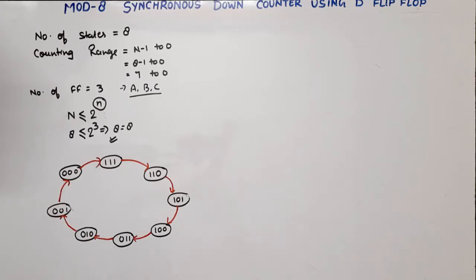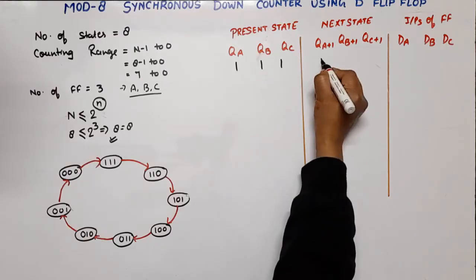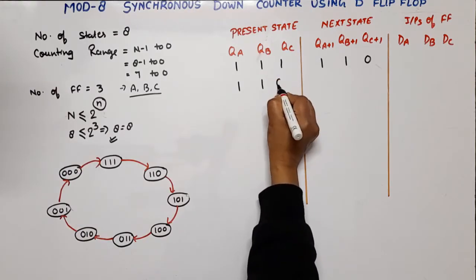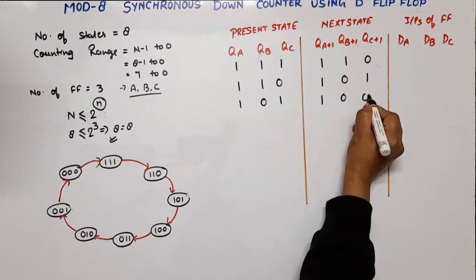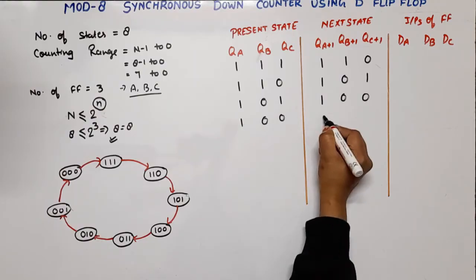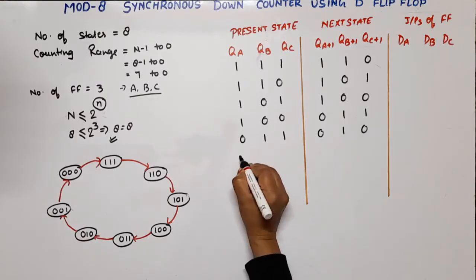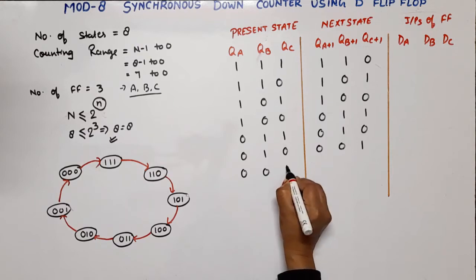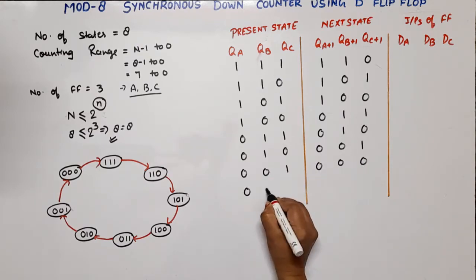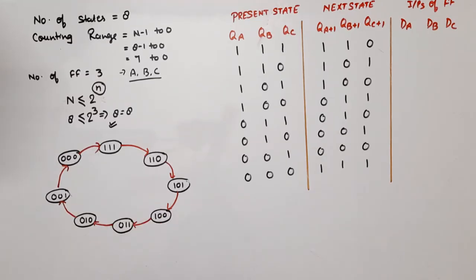Now we draw the state table. First state is 7, next state is 6. Present state is 6, next state is 5. Present state is 5, next state is 4. Present state is 4, next state is 3. Present state is 3, next state will be 2. Present state is 2, next state will be 1. Present state is 1, next state will be 0. Now present state is 0 and next state will be 7.